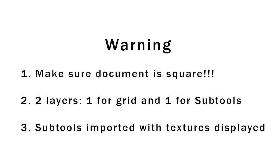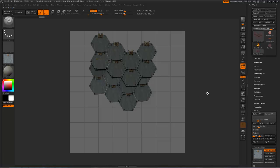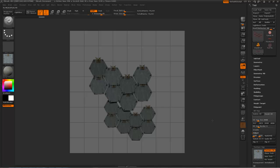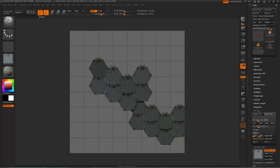Here's a warning — before we start the placement phase, let's double-check a few things. Number one, make sure the document is square, preferably 2048 or 1024. I chose 2048 so that when I shrink it down later to 1024, it'll be nice and crisp. Number two, we have two layers: one for the grid and one for the roof tiles. Number three, we have all the sub tools loaded and the textures are ready. Now I'll place a few of these big clusters in the center, using the grid to judge spacing. I'll try to keep each tile roughly the size of a grid space for consistency.